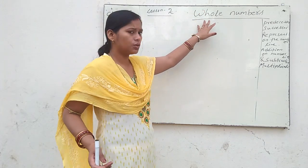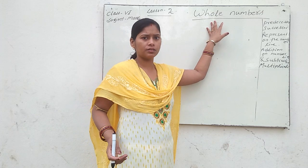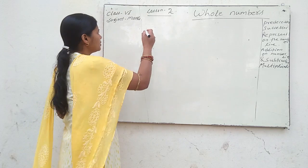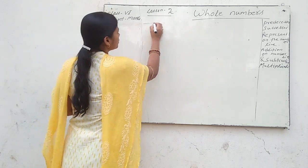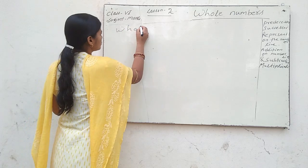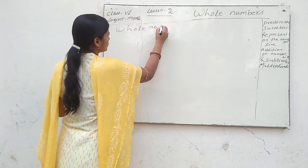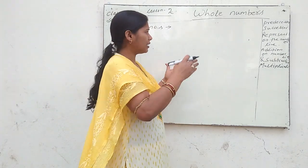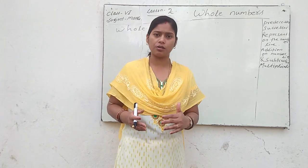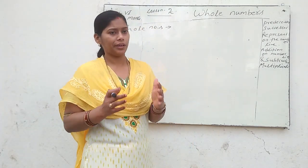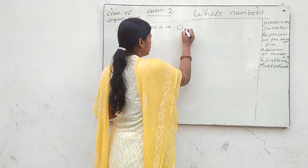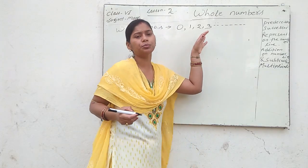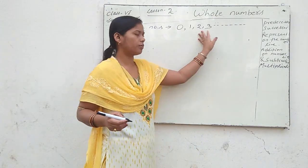Recall what is a whole number from your junior class — class 4 and 5. The definition of whole number: it is a combination of 0 and your natural numbers. So whole numbers are 0, 1, 2, 3 up to infinity.